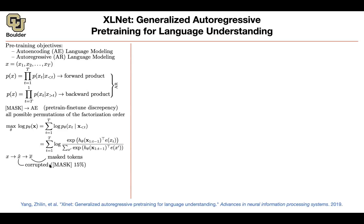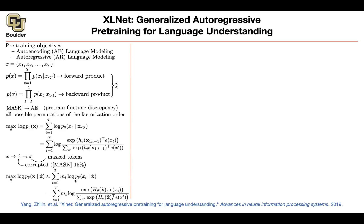For auto-encoding, you take your sentence, you corrupt it, you mask 50% of your words, and then you need to predict the masked tokens. Mathematically, you have the maximum of the log probability of the masked token conditioned on the corrupted sentence. You can expand it — the product of logs becomes log of the product. But now you are making an assumption that these probabilities, given the mask, are independent. So you are making a strong independence assumption here.